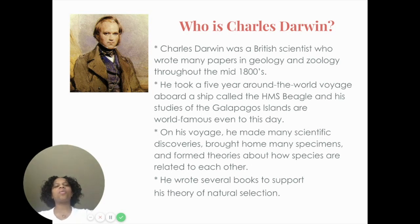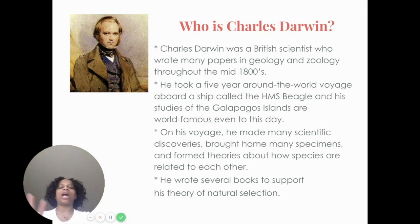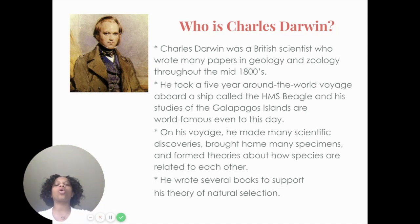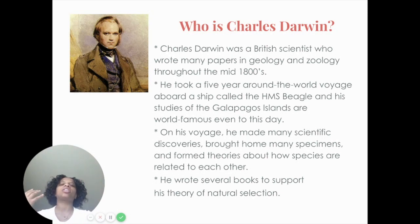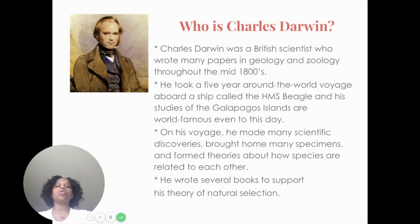Next, Charles Darwin. He was a British scientist who wrote many papers in geology — the study of the earth — and zoology throughout the mid-1800s. He took a five-year voyage around the world aboard a ship called the HMS Beagle. His studies of the Galápagos Islands are world famous to this day. That is where he came up with his theory of evolution known as natural selection.